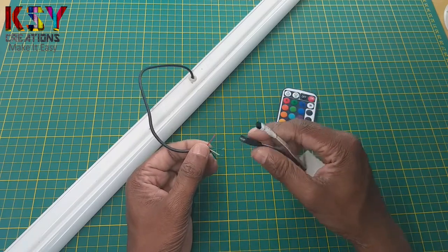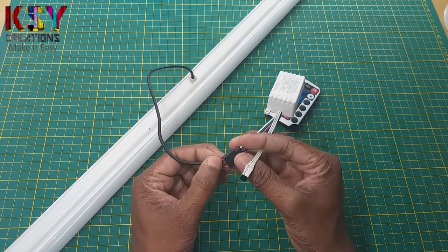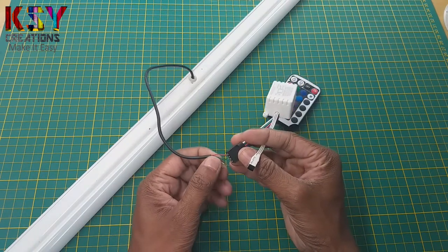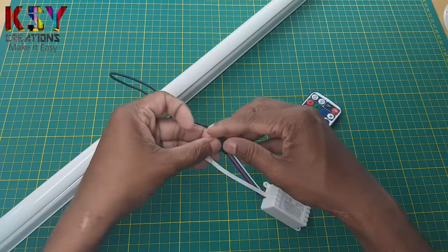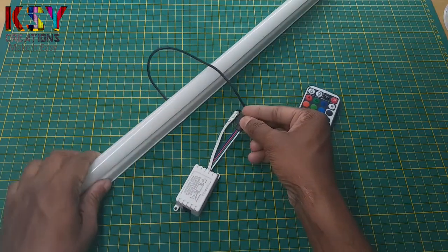So here I will connect this red wire to the positive terminal and remaining all terminals. Now we will connect this to the 12 volts and we will see how this tube light works.